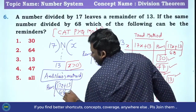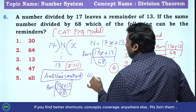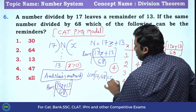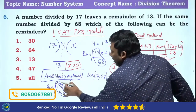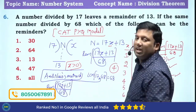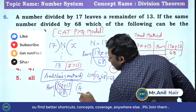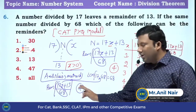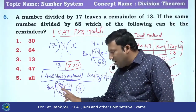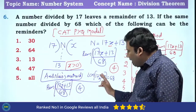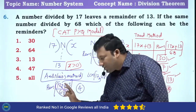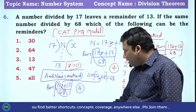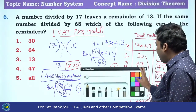Take the LCM of 17 and 68, which is 68. How many times does 17 go into 68? 4 times. So the answer is 4. Why? Because 17 goes 4 times into 68, so the answer is 4.